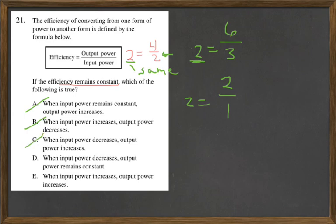On D, when input power decreases, output power remains constant. No, we already saw that when it goes down, then the top one goes down. So when input power increases, output power increases. That is the correct answer.